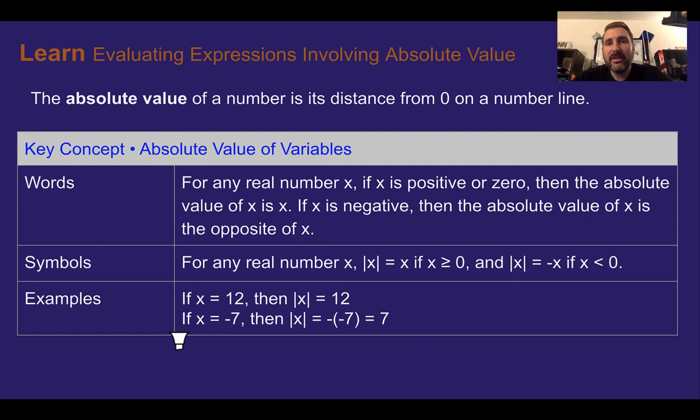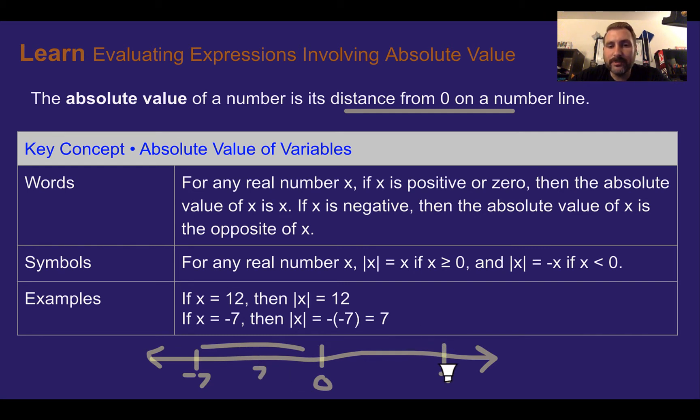For me, I think it's easier to explain using a number line, so I'm going to draw one real quick. If we look, the absolute value is just its distance from zero. Here's negative 7. How far is it away from zero? It's 7. Here's 7. How far is it away from zero? Also 7.